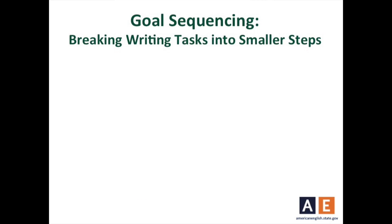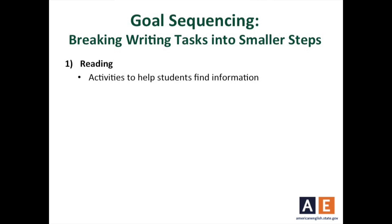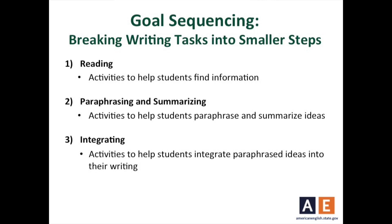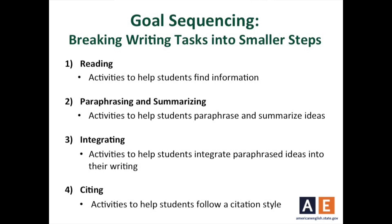The four smaller steps that come to mind are these. First, focusing on reading — specifically activities to help students find information. Then, activities to help students with paraphrasing and summarizing. Third, activities to help students integrate paraphrased ideas into their writing. And finally, helping students follow a citation style guide, such as APA or MLA in the U.S.